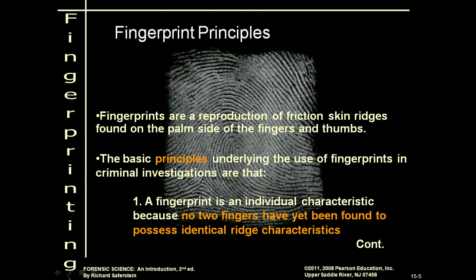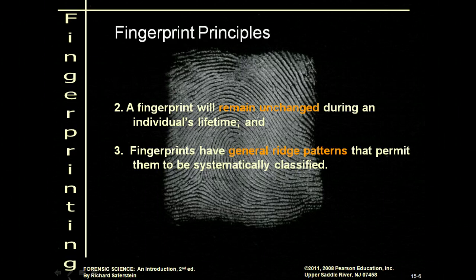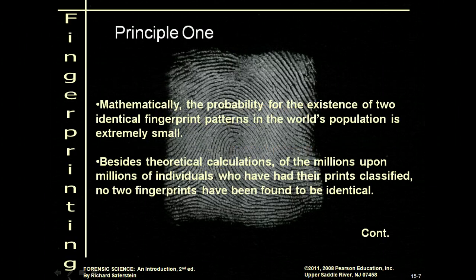There are three main principles that form the basis for fingerprints being used in criminal investigation. One: a fingerprint is an individual characteristic — not class — because no two fingers have yet been found to possess identical ridge characteristics. Two: a fingerprint will remain unchanged during an individual's lifetime. Three: fingerprints have general ridge patterns that permit them to be systematically classified.